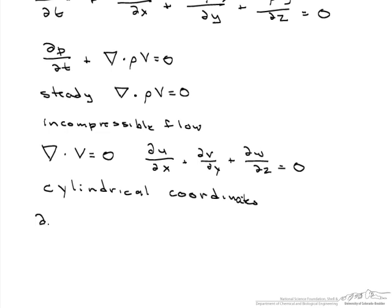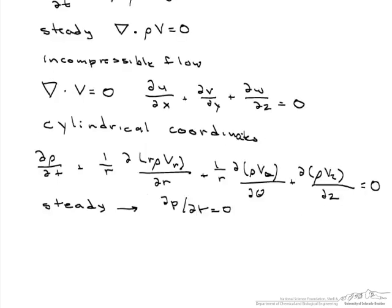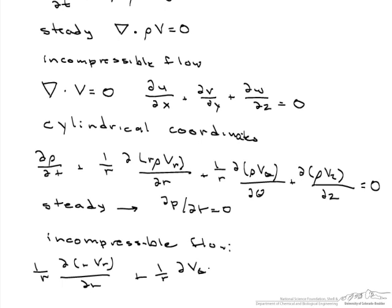So we start again with d(rho)/dt + (1/r) * d(rho*v_r)/dr + (1/r) * d(rho*v_theta)/dtheta + d(rho*v_z)/dz = 0. For steady flow, the d(rho)/dt term equals zero. And finally, for incompressible flow, we end up with (1/r) * d(v_r)/dr + (1/r) * dv_theta/dtheta + dv_z/dz = 0.